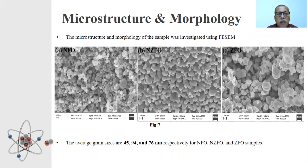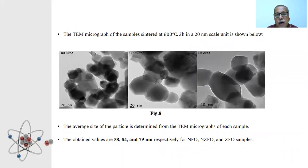The microstructure and morphology are identified using FESEM. The FESEM micrograph shows nearly spherical material particles. The particle size observed are 45, 94, and 76 nanometer respectively for nickel ferrite, nickel zinc ferrite, and zinc ferrite samples. These values are found to be higher than the crystallite size observed from X-ray diffraction analysis which indicate the agglomeration tendency of the particle. To confirm this point, TEM micrographs were taken. TEM micrographs also confirmed the agglomeration tendency of the particle. The obtained particle size values are 58, 84, and 79 nanometer respectively for nickel ferrite, nickel zinc ferrite, and zinc ferrite samples.